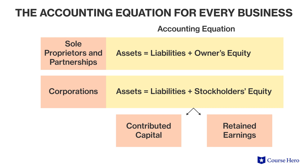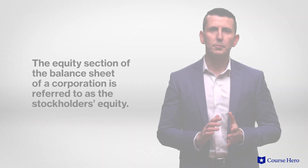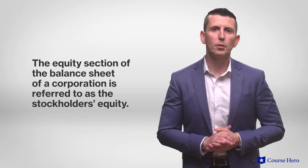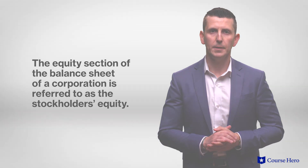There is a technical difference between owners of a corporation and owners of other types of entities. Since only a corporation can issue stock, the equity holders of a corporation are known as stockholders. For this reason, the equity section of the balance sheet of a corporation is referred to as the stockholders' equity.